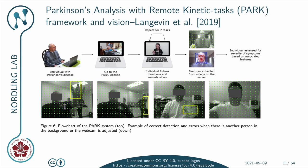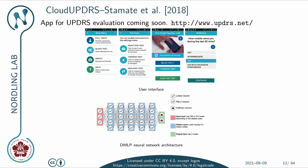One documented error shows the system clearly recognizes the hand first, but when another person walks in the background it mistakes that person for the hand. Another error shows it first recognizes the hand but then the person makes a small adjustment to the webcam and it fails to recognize it. We also have the CloudUPDRS by Stamate et al. 2018, an app for UPDRS evaluation that is coming soon according to their website.